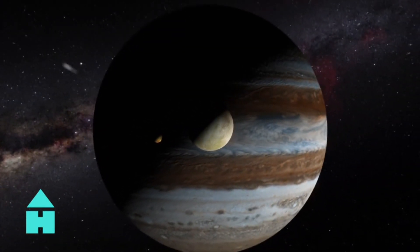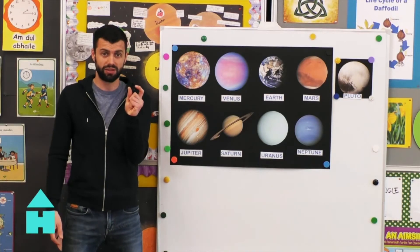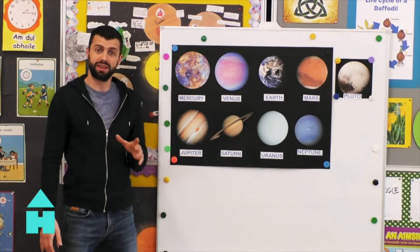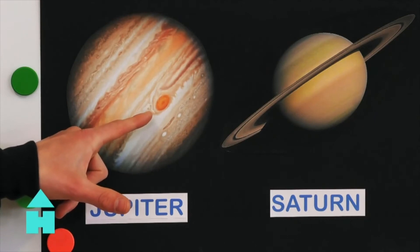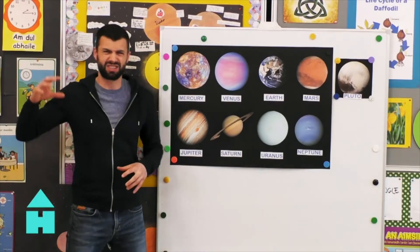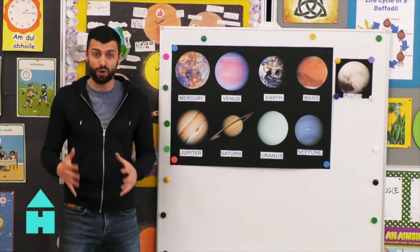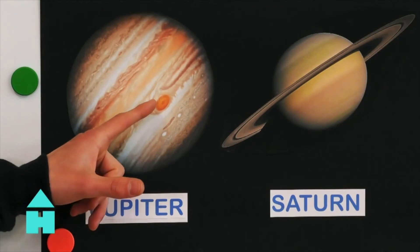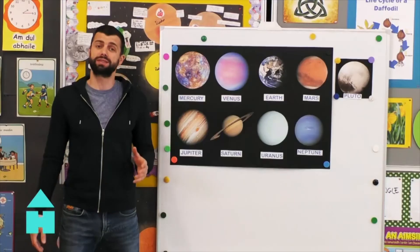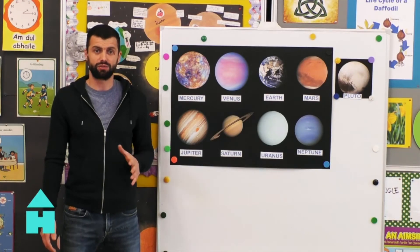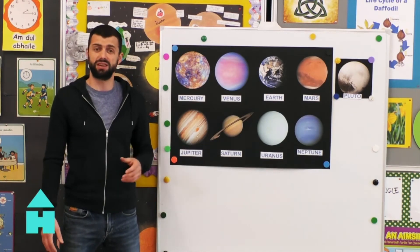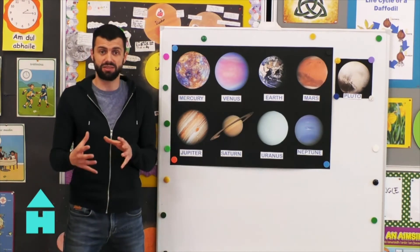To help you imagine this, if Earth was the size of a grape, Jupiter would be the size of a basketball. Now Jupiter's most famous feature is this giant red spot. This is a giant storm that has been blowing non-stop for hundreds and hundreds of years. This spot is bigger than our whole planet. Jupiter is named after the king of the Roman gods. The Romans named the star of Jupiter after seeing it in the night sky, believing it to be sacred to their god, Jupiter.